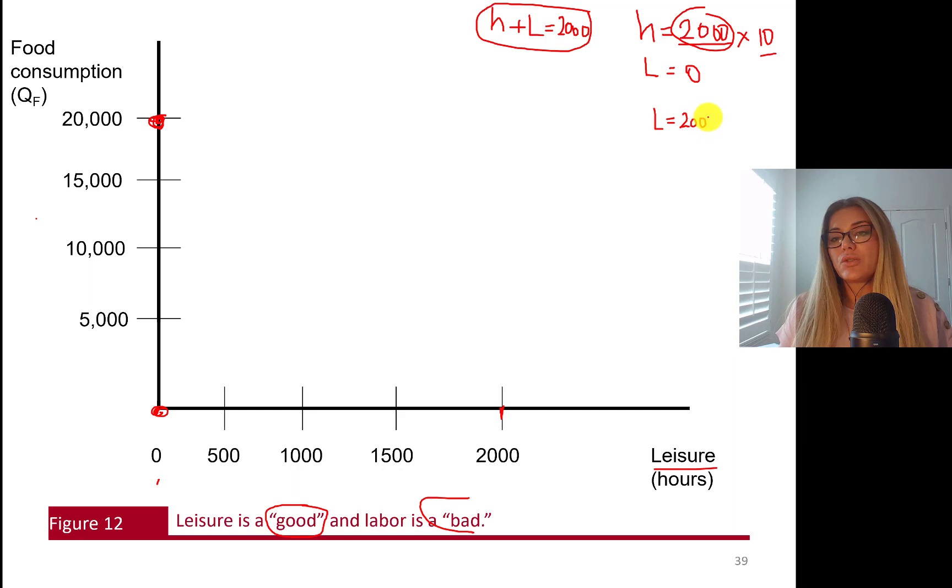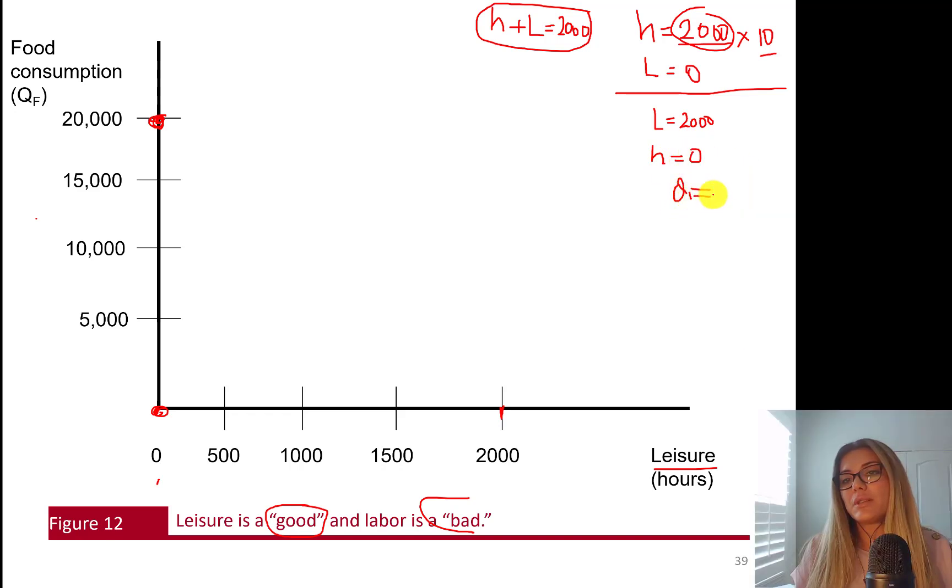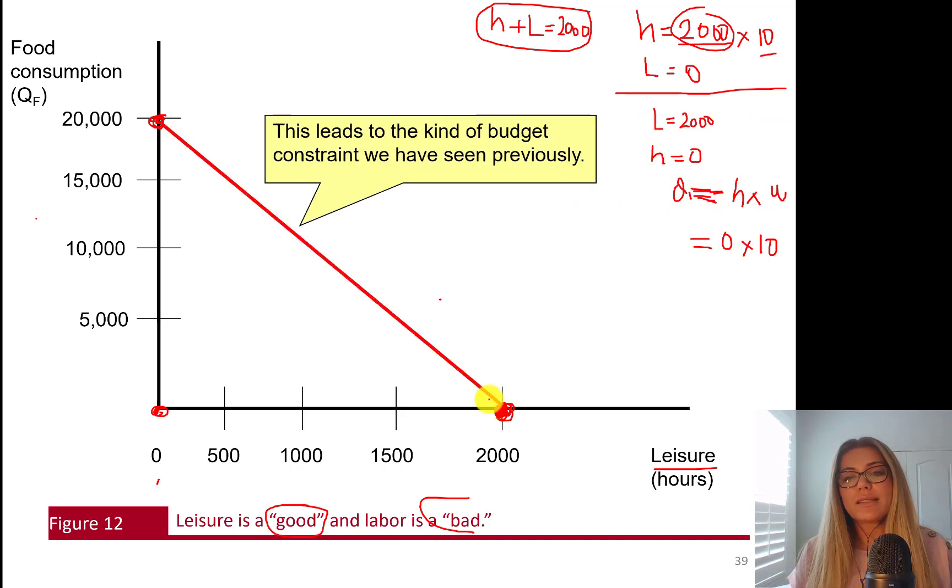So that's one extreme. Leisure is zero. You work 2,000 hours times 10, $20,000. So this is one point on your budget constraint. Another extreme is actually your leisure is 2,000. Your hours of work is zero. So your quantity of food consumption is going to be hours worked times wage rate. So you work zero hours and your wage rate is $10. 10 times zero is zero. So if your leisure is 2,000, your food consumption will be zero.